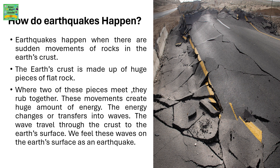How do earthquakes happen? Earthquakes happen when there are sudden movements of rocks in the earth's crust. The earth's crust is made up of huge pieces of flat rock. Where two of these pieces meet, they rub together, creating a huge amount of energy.